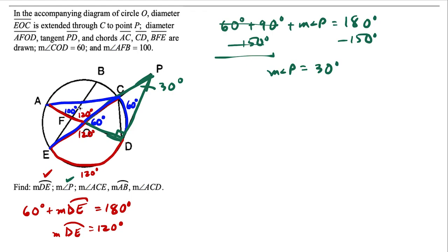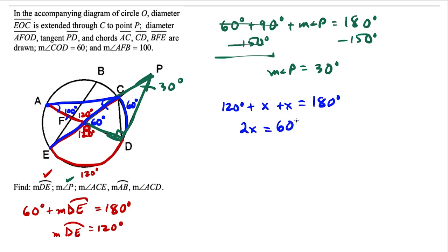Our goal is to find the measure of angle ACE, which is part of triangle AOC. Angle ACE is really angle ACO. Notice that this triangle is isosceles because AO is a radius and CO is a radius, so the two base angles are congruent. With the top angle at 120 degrees, we have 120 plus x plus x equals 180, giving us 2x equals 60, so x equals 30 degrees.